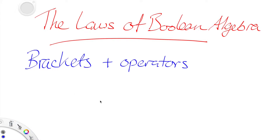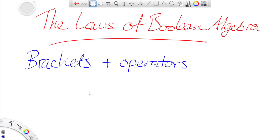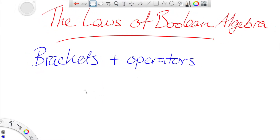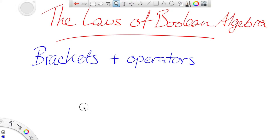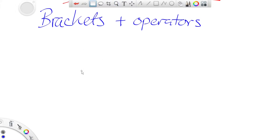What I will do here is go through the other laws that we've covered and hopefully just demonstrate them so you can use them when we get to Boolean simplification. The first thing is to make sure you're happy with brackets and operators.